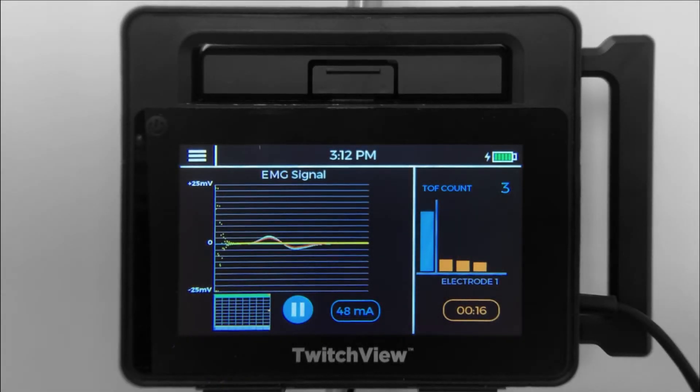Once the fourth twitch disappears, the monitor will measure the TRAIN-4 count. The first time the monitor measures a TRAIN-4 count of 0, it will ask if you'd like to proceed with post-tatanic count.